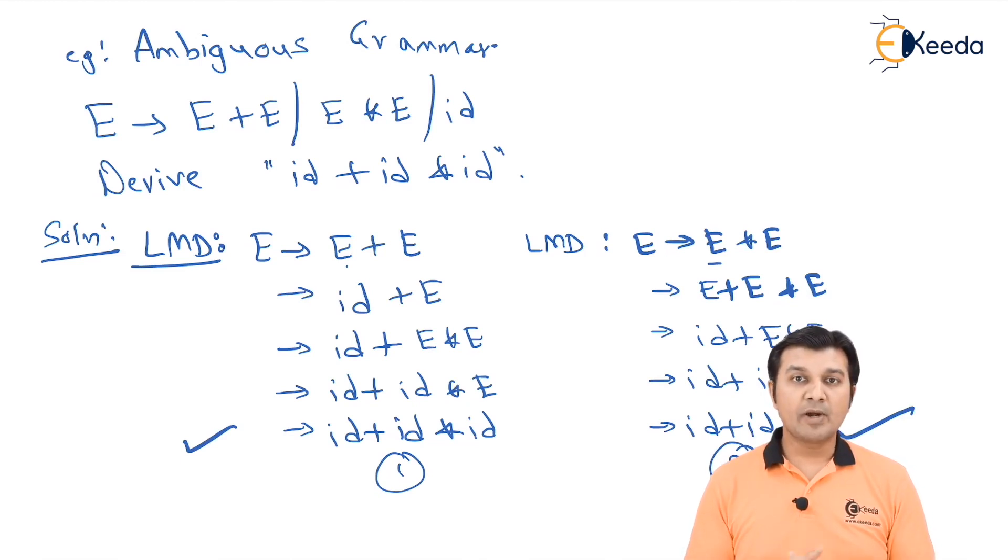Apart from these two strings, if you try deriving this string using RMD also, you will realize that you are able to have more than one RMD, and that is the reason we say that grammar is ambiguous in nature.